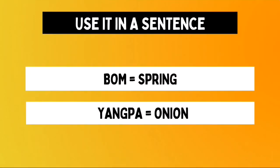The first part of the term is BOM, which we already tackled on this channel, and it means SPRING. The second part is YANG PA, our word for today, which we already know as ONION. So when we say BOM YANG PA, it simply means SPRING ONION — just a specific type of onion.